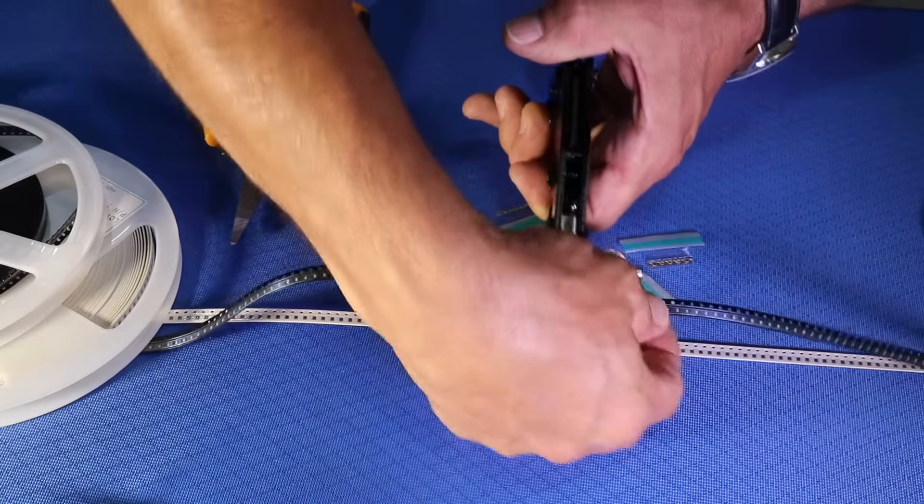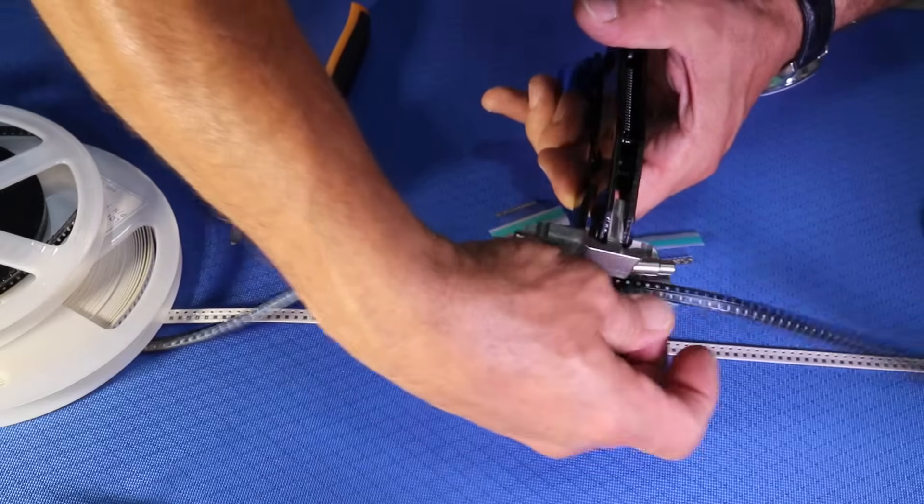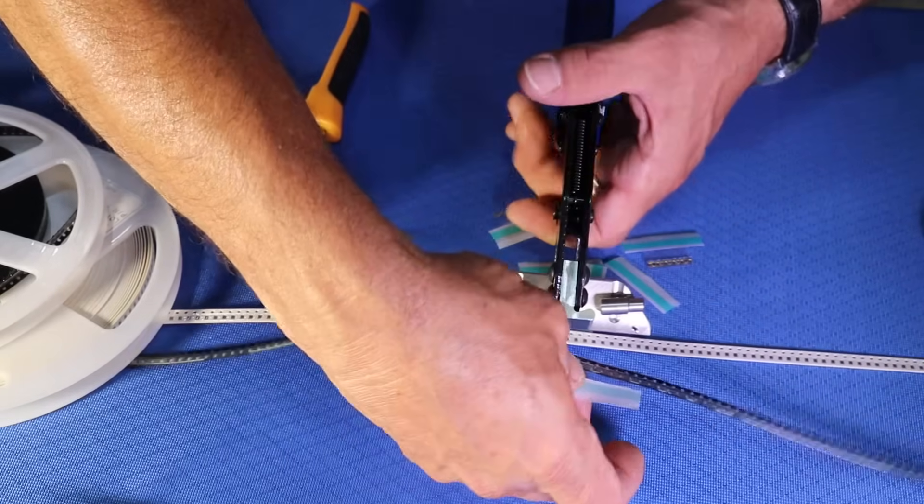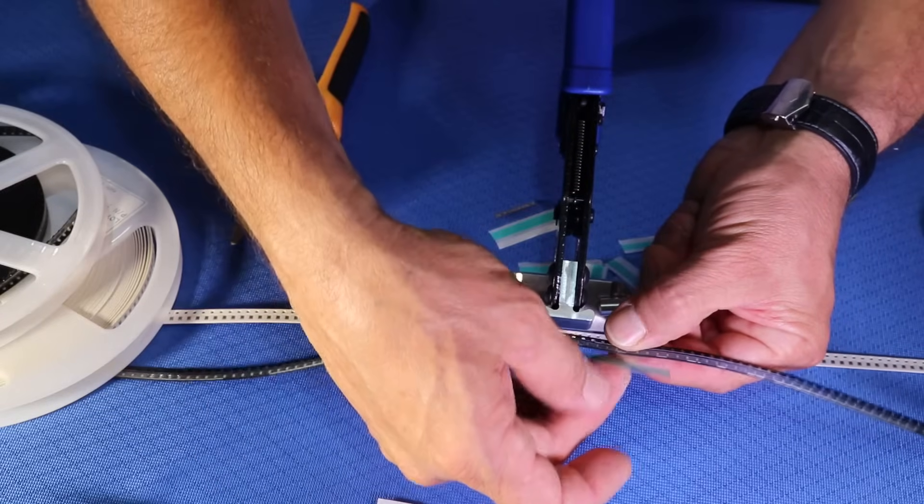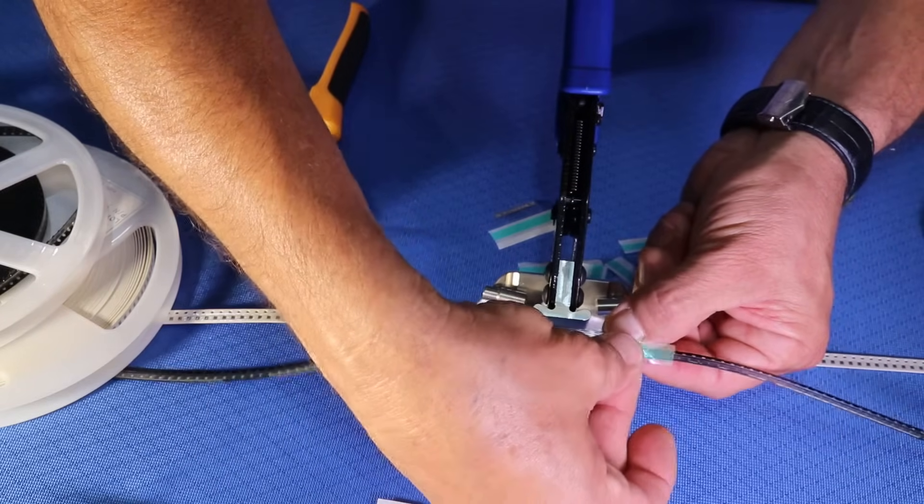Once we crimp the tool, we'll remove the carrier tape from the splicing tool, remove the clear liner, and fold over the cover tape connector.